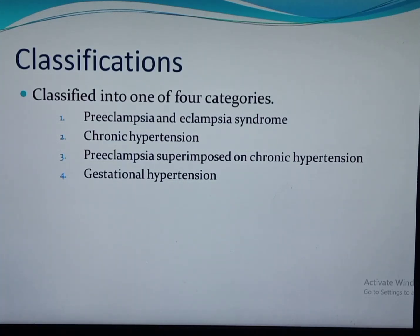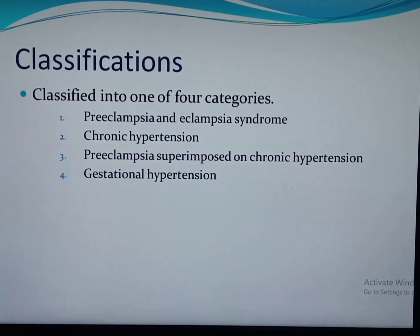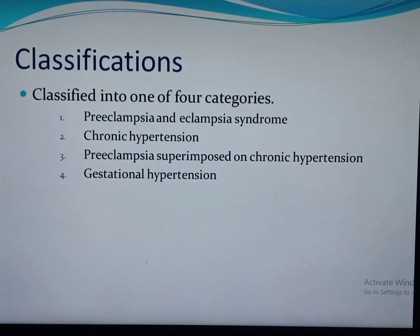The second category is chronic hypertension, defined in three ways: hypertension diagnosed before pregnancy, hypertension diagnosed before 20 weeks of gestation, or hypertension during pregnancy that persists after 12 weeks postpartum. One of the commonest complications of chronic hypertension in pregnancy is the development of superimposed preeclampsia, which is also one category in this classification. The fourth category is gestational hypertension, which we will discuss in this part.